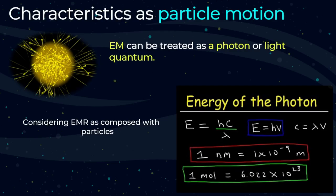Now let's discuss the characteristics as particle motion. Electromagnetic radiation can be treated as a photon or light quantum because it transmits energy. In other words, we can consider electromagnetic radiation as composed of particles. The energy of the photon can be written as E equals H times C divided by lambda, where H means the Planck constant, C means the velocity of light, and lambda means the wavelength. We can simplify the equation as E equals H nu, where H is the same Planck constant and nu means the frequency.